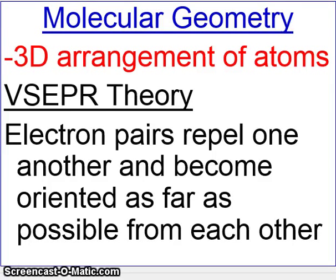This is Lesson 5 of Chapter 6, and this lesson will talk about something called Molecular Geometry. This refers to the three-dimensional arrangement of atoms in a molecule. For example, a water molecule — we will learn about how it looks, how it actually appears if you were to look at it and see it.